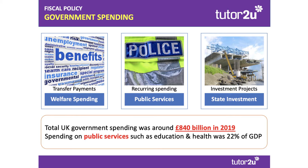The third category is capital spending by the state. These are big, lumpy, significant investment projects such as HS2, HS3, Crossrail, the London Super Sewer, and other large investment projects.